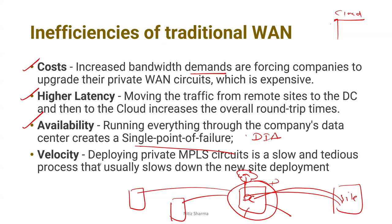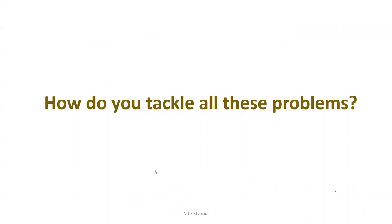Velocity was another issue. Deploying an MPLS circuit — which is still a significant technology — is very time-consuming when bringing up a new site. I'm not saying SD-WAN is a full replacement for MPLS, but MPLS alone is not a complete solution to the problems we have today. So how do you tackle all these problems?